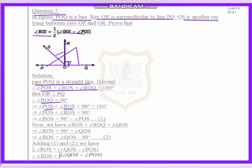So angle POS plus angle ROS plus 90 equals 180. We just put the value of angle ROQ as 90.